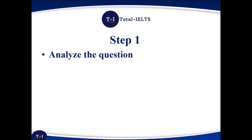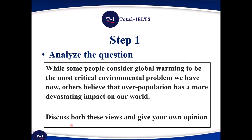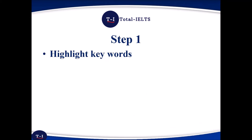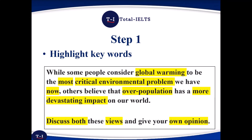Let's begin with Step 1: analysing the question. Now this question type — 'discuss both these views and give your own opinion' — I believe is one of the more challenging Task 2 types. When you analyse the question, highlight the keywords. We have both viewpoints here. The first viewpoint is that global warming is the most critical environmental problem, while others believe overpopulation has a more devastating impact. And don't forget to include your own opinion.